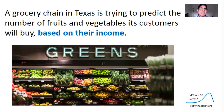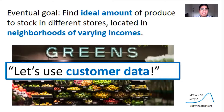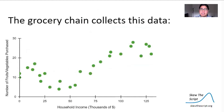A grocery chain in Texas is trying to predict the number of fruits and vegetables its customers will buy based on their income. Their goal is to find the ideal amount of produce to stock in stores in neighborhoods of various income levels. Some families use SNAP or food stamps; Texas has programs providing extra SNAP funds if families buy produce instead of processed foods. The grocery store collects data — the x-axis shows household income, the y-axis shows fruits and vegetables purchased, and each green dot represents one shopper.